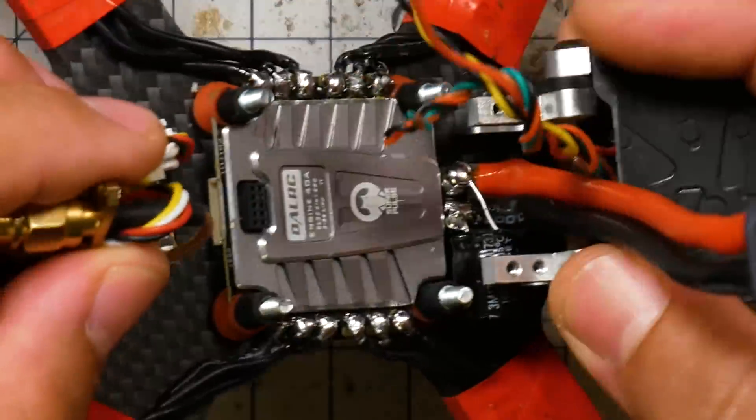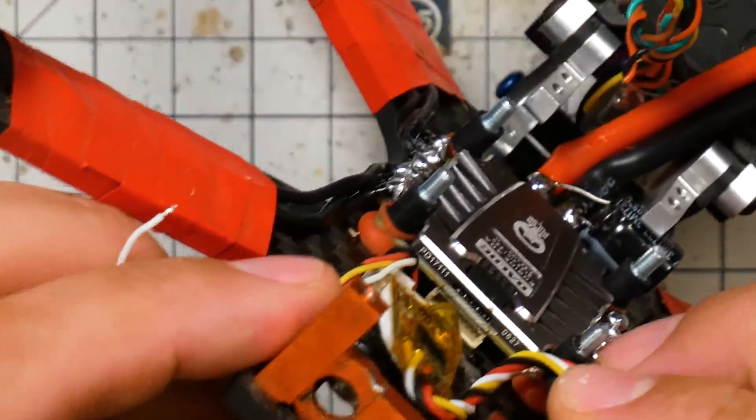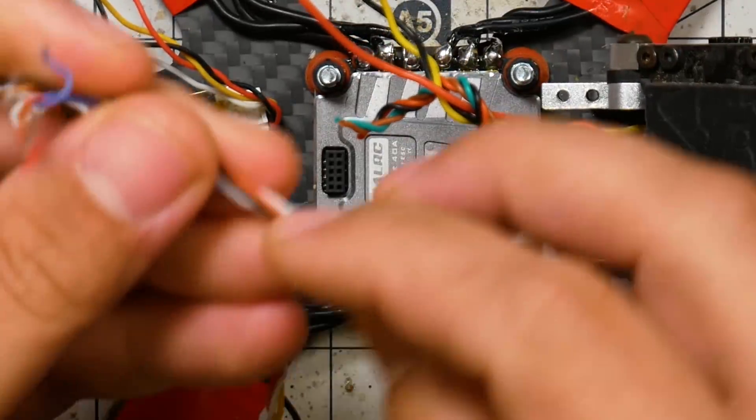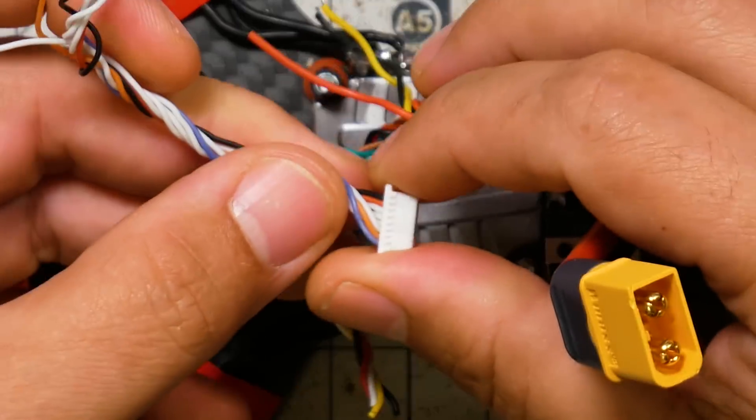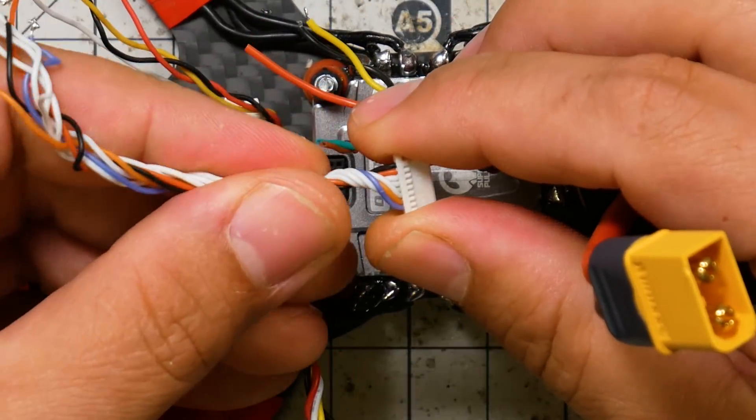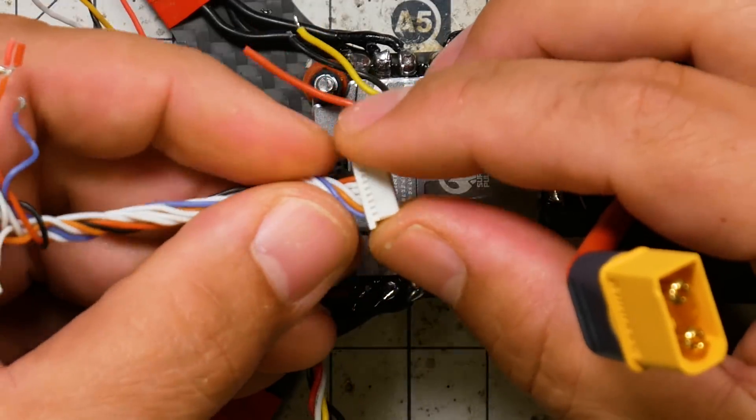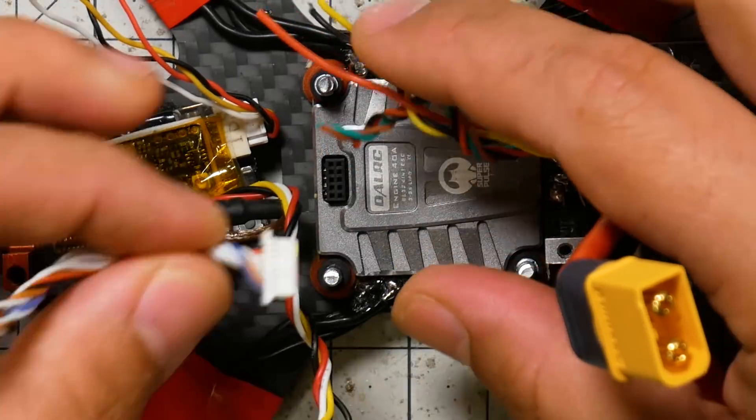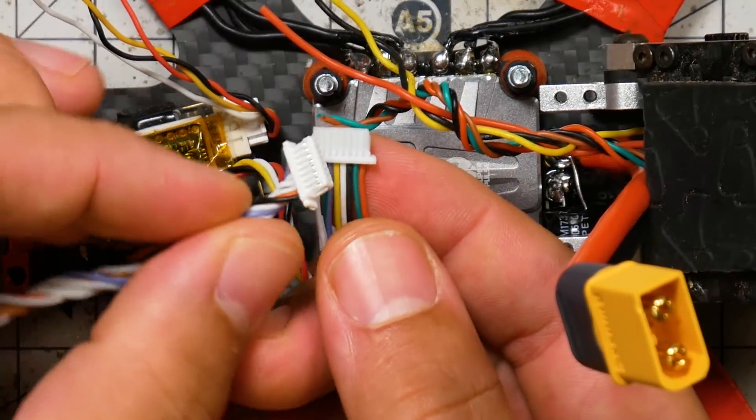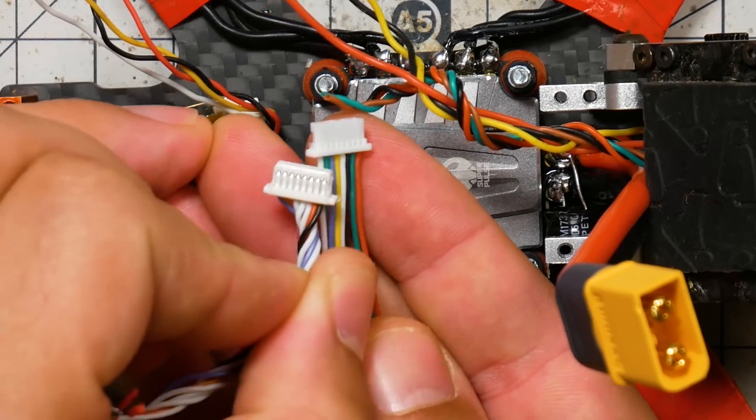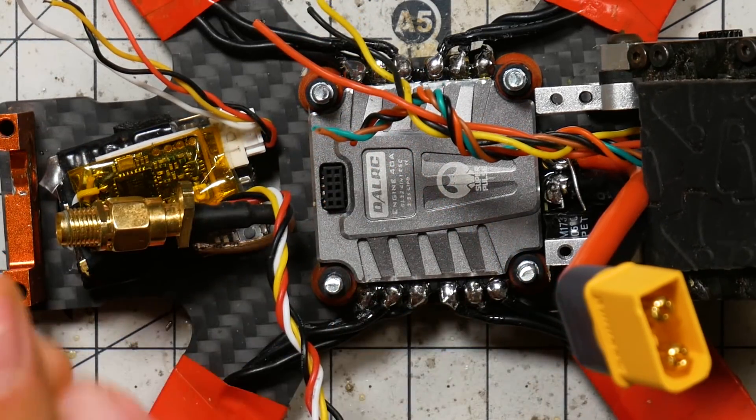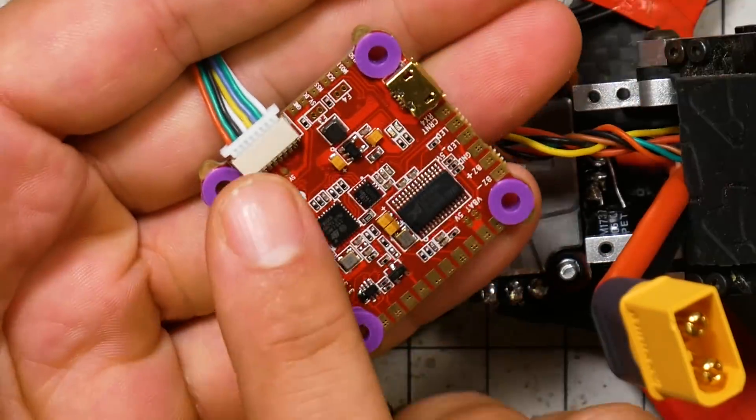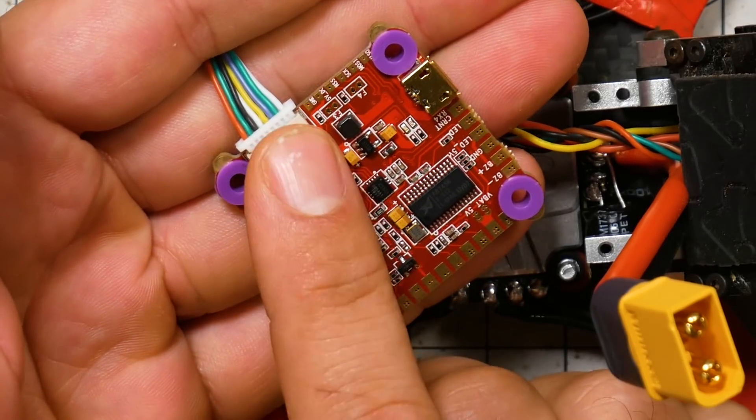Now, this ESC has a plug, as many 4-in-1 ESCs do. It's got a plug here to help you interface it with the flight controller better. And that plug is going to carry all the signal wires, and it also has things like current sensor output, ESC telemetry. Although these plugs for the Heliospring and the DALRC are exactly the same size, the pinouts are not actually standardized.